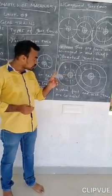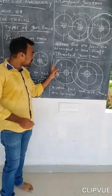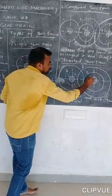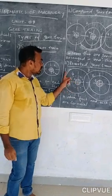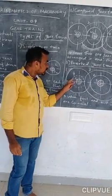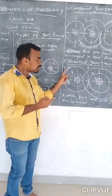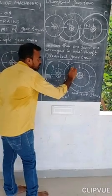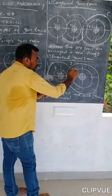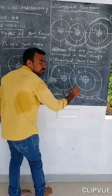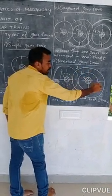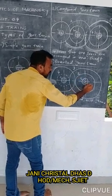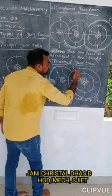In the diagram for the reverted gear train: shaft 1 carries gear 1, and gear 2 is also associated with shaft 1. Gear 2 and gear 3 are on shaft 2. The input and output shafts are coaxial — that is the defining feature of the reverted gear train.